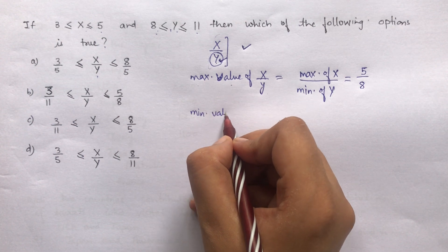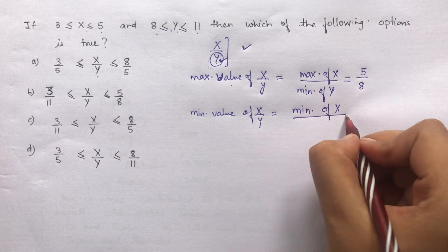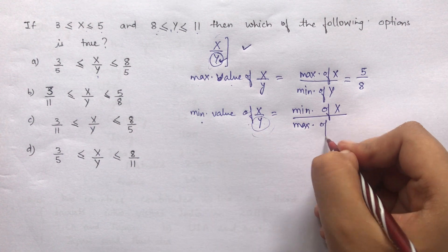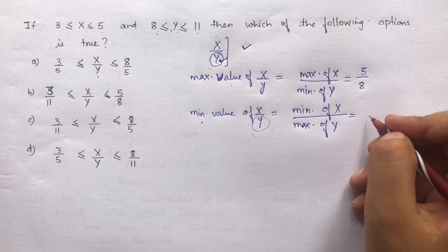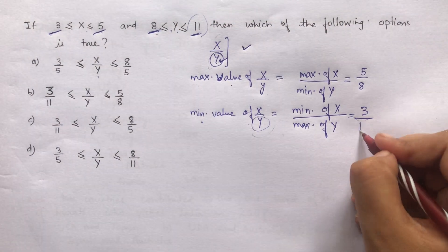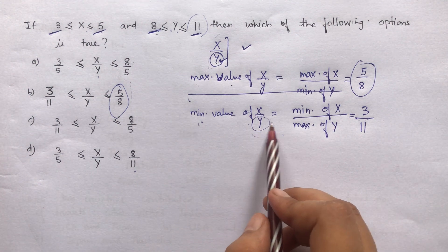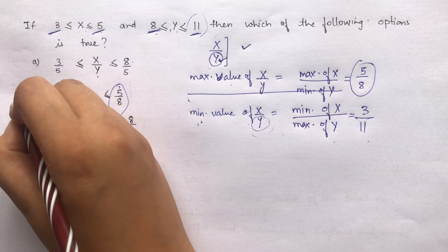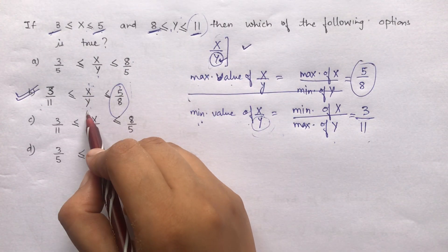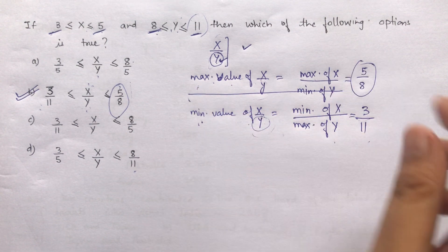Now let's find the minimum value of x upon y. For minimum value, the denominator should be as large as possible. So minimum value of x/y = minimum value of x, which is 3, upon maximum value of y, which is 11. So minimum value of x/y is 3/11. So the answer is B. Remember: in division, the larger the denominator, the smaller the fraction, and vice versa.